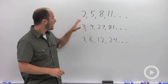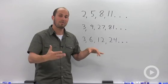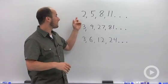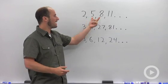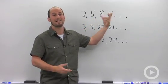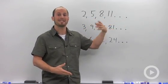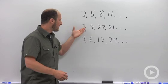Our first one is 2, 5, 8, 11, and hopefully what you see is that in order to get from one number to the next you're just adding 3. So you add 3 to get to 5, add 3 to get to 8, 11. The next number would be 14, 17, and so on.